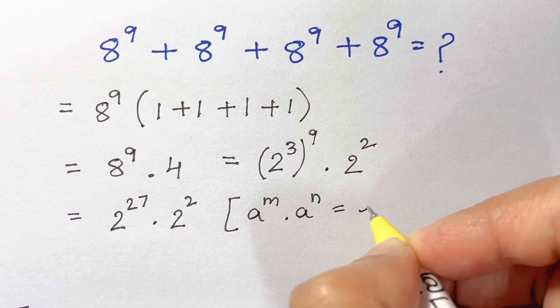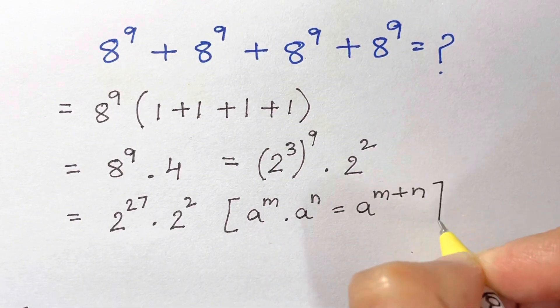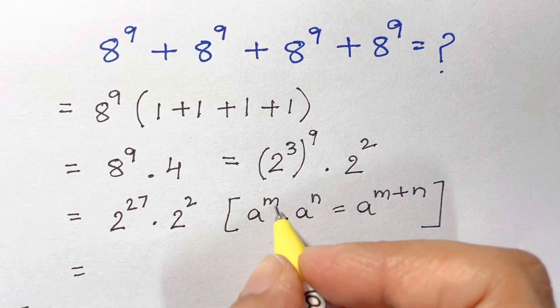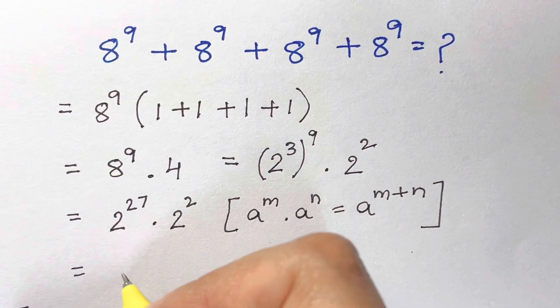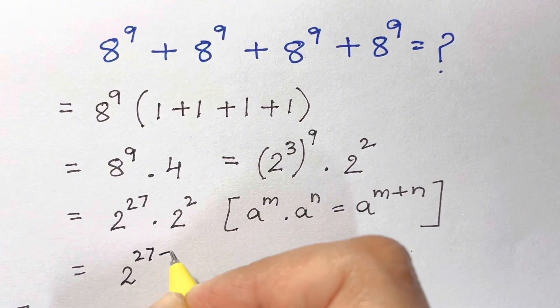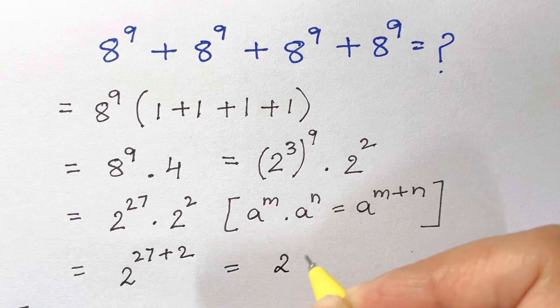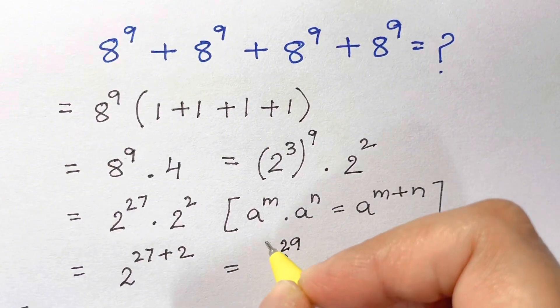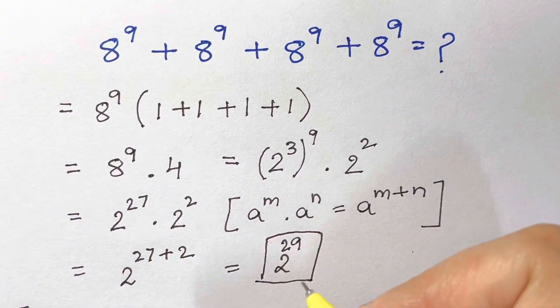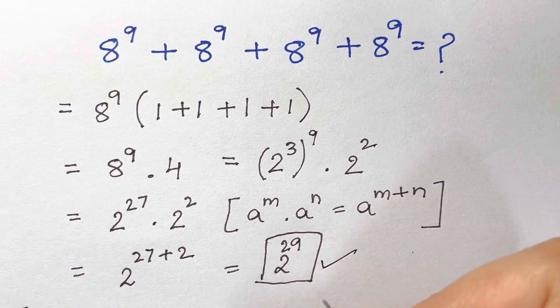So whenever you have same base and there's multiplication between them you add the powers. So let's add them 2 to the power of 27 plus 2 and that's equal to 2 to the power of 29. That's your answer.